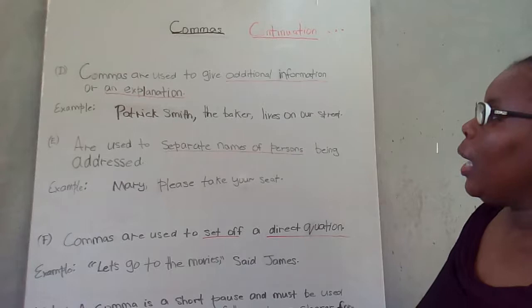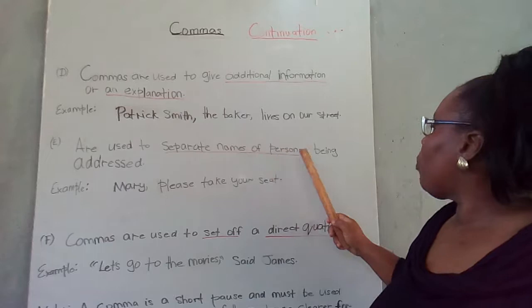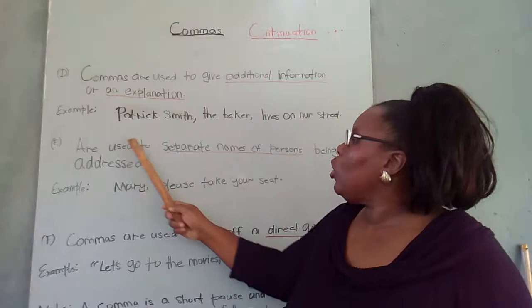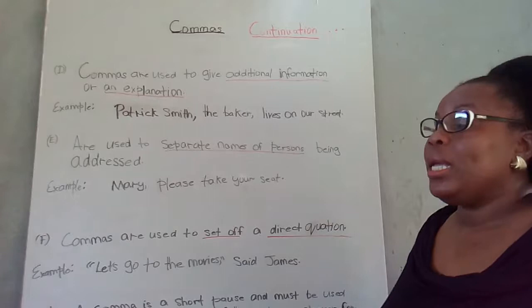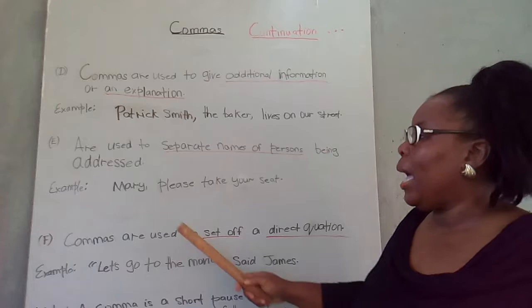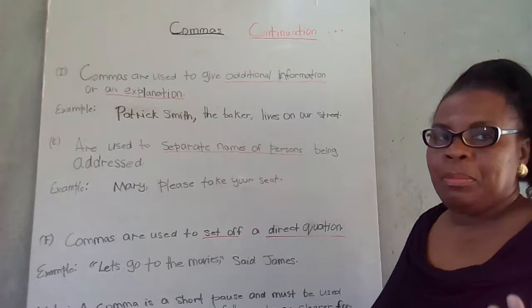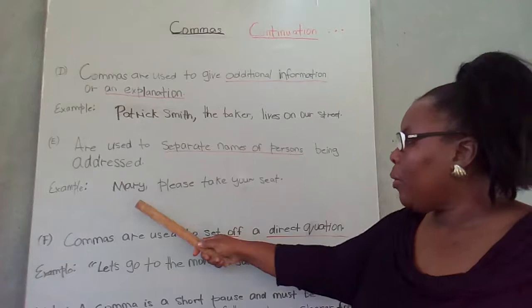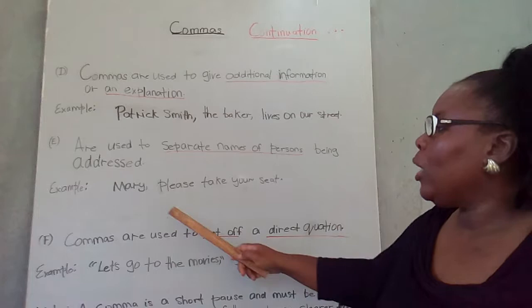Commas are used to separate names of persons being addressed — not "address" as a location, but the person that you're speaking with. So I say, "Mary, please take your seat." I'm addressing Mary, telling her what to do. I use the comma to separate her name from what I'm stating to her.